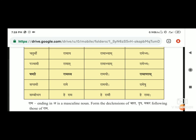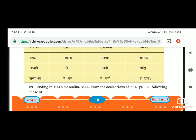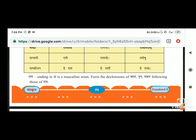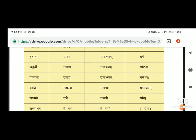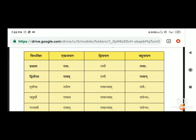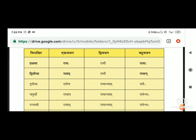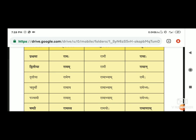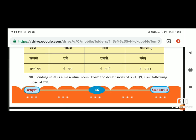Ramah is a masculine noun from the declension of bala, nrupamakar, following those of ram. वैसे ही bala का भी होगा, nrupamakar का भी होगा. एक example देते हैं - राम प्रथमा vibhakti में राम ही रहेगा. द्वितीया में होगा बालम, तृतीया में होगा बालेन. वैसे ही change होते रहेंगे.